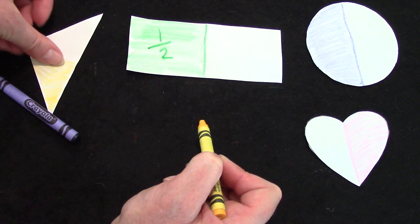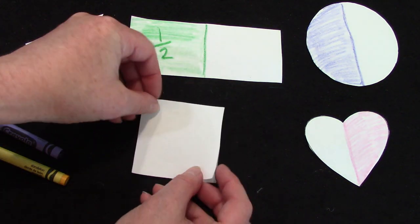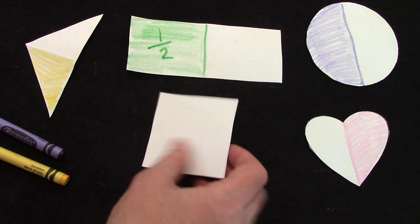I'm going to put it up here in this little corner so that I have space for my square. There's more than one way that I could fold this in half.